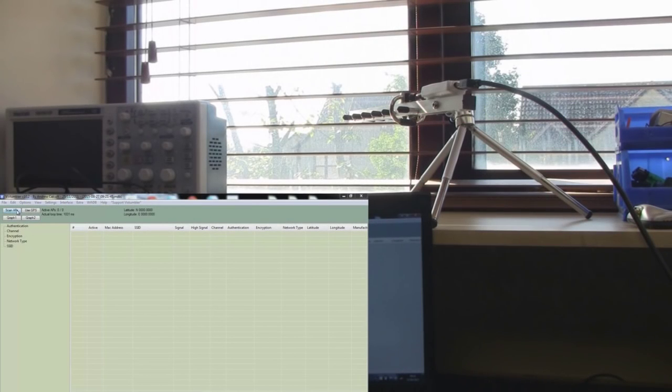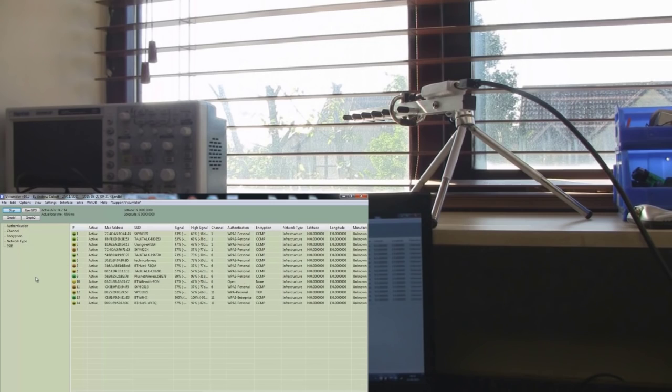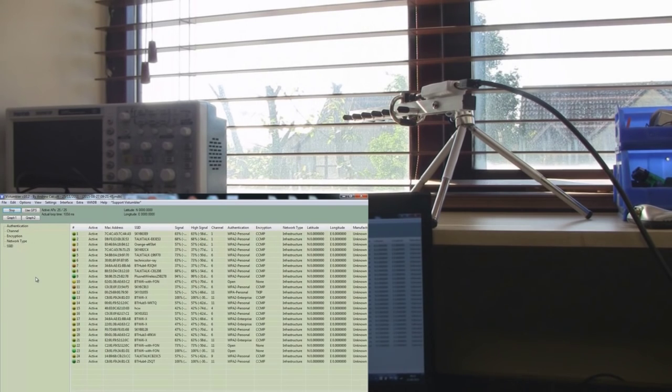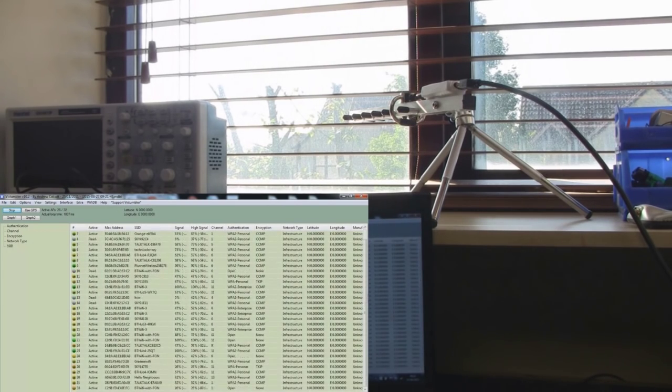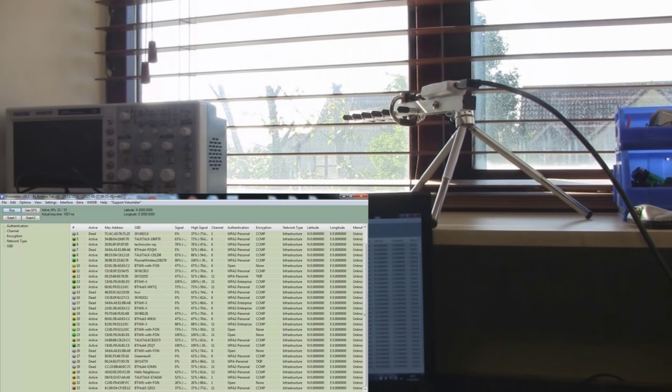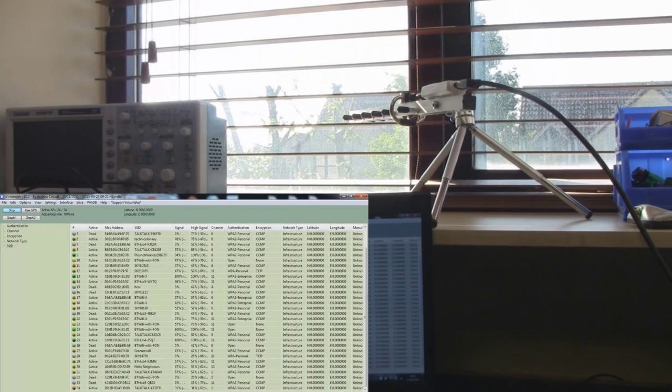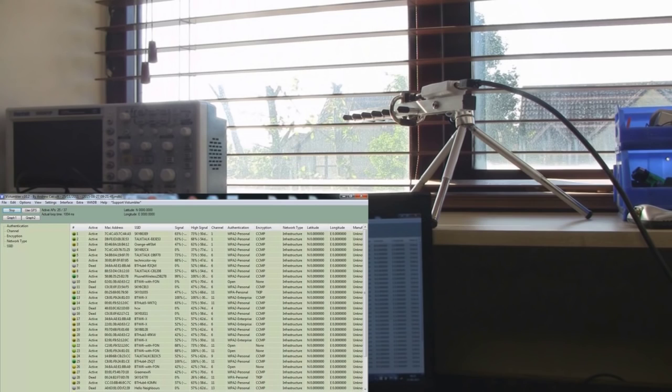So let's do a quick scan and see how many access points we can actually pick up. Already considerably more than the internal WiFi card on my laptop can pick up. Scrolling down, 33 access points, 34. So a few of these are actually dead, but there's quite a few that are a green color which we could actually connect to if we wanted to. Not bad, it does do its job.